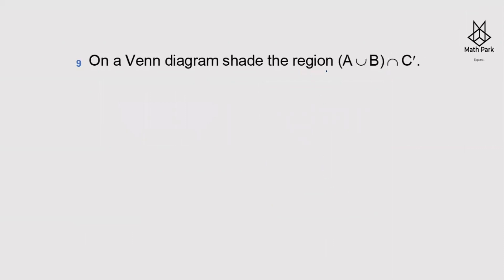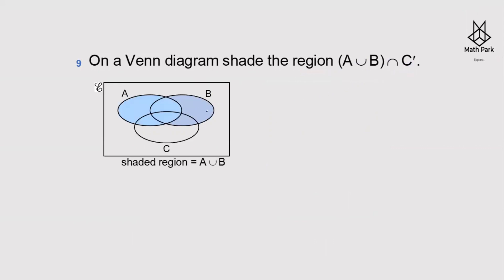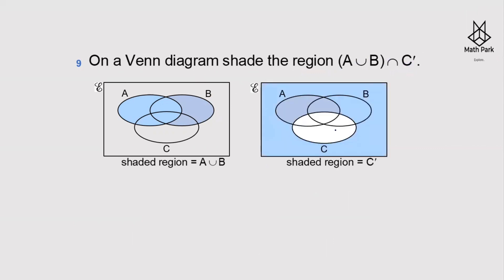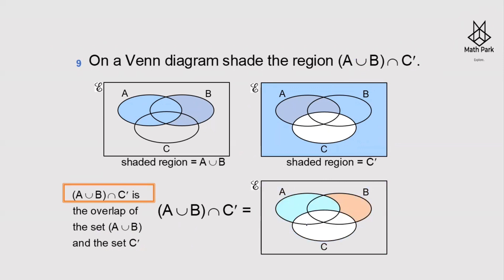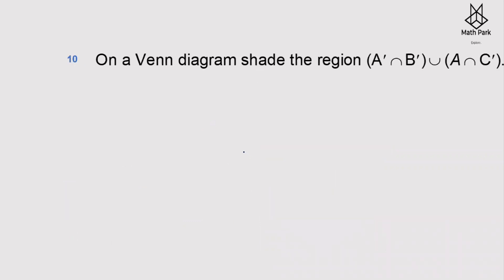On a Venn diagram, shade (A∪B)∩C'. A∪B is the combined region of A and B. C complement (C') is everything not in C. The intersection of A∪B and C' is the overlap of those two — the parts of A and B that are not in C. The shaded region represents (A∪B)∩C'.